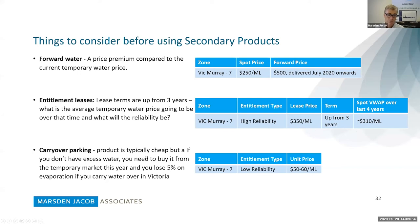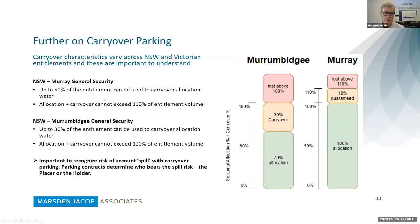Carryover parking is typically cheap — around $50 to $60 per megalitre if you're parking on a lower reliability entitlement type. But if you don't have the water, you're going to have to buy it off the temporary market. In Victoria, you'll also lose something around 5% through evaporation. There are a couple more slides on carryover to work through, and you need to think about what's possible and where.